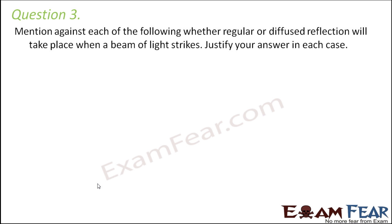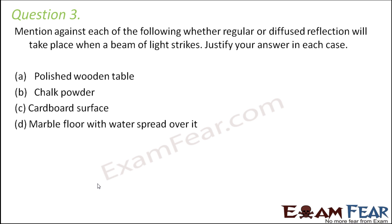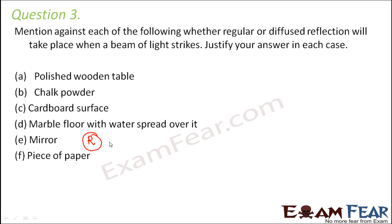Looking at various objects, which ones are smooth enough for regular reflection to take place? Wherever regular reflection occurs, image formation takes place. Obviously a mirror is the one where regular reflection takes place, because we can see our image in a mirror. For all the others — polished wooden table, chalk powder, cardboard surface, marble floor with water, piece of paper — diffused reflection takes place. Even a polished wooden table has deep irregularities, which is why you do not see a clear image of yourself in it.